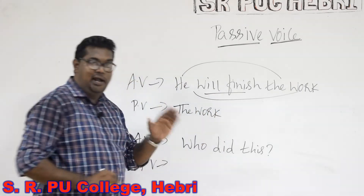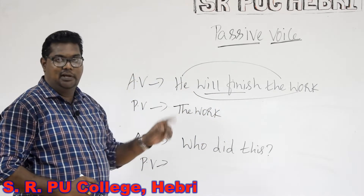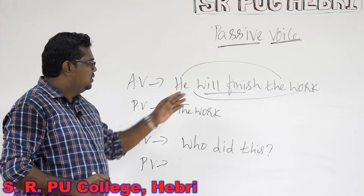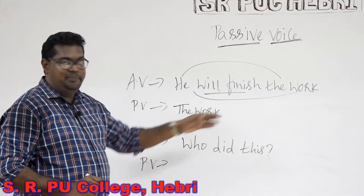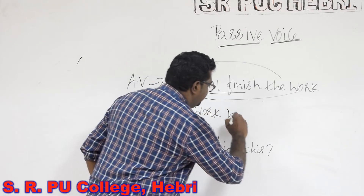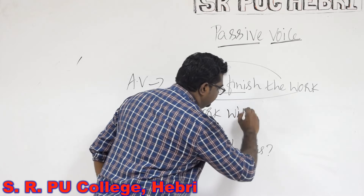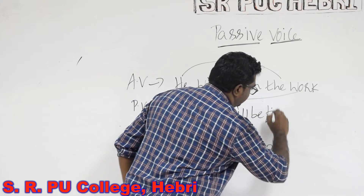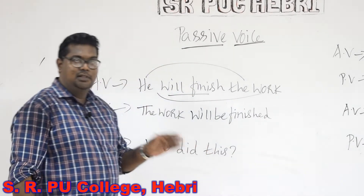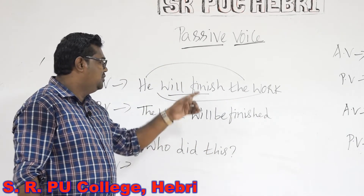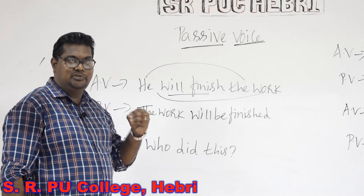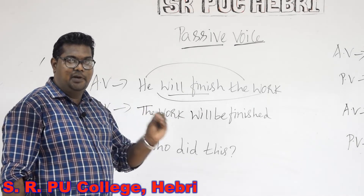Then we need to identify the main verb. In this sentence, 'will finish' is the main verb, and that has to be changed to passive form. So when you change 'will finish', it will become 'will be finished', because we are supposed to write the past participle form of the word 'finish' in passive voice. Then we are supposed to use the preposition 'by'.